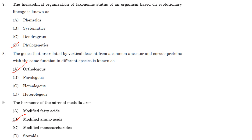The hierarchical organization of taxonomic status of an organism based on evolutionary lineage is known as phylogenetics. Phylogenetics is an attempt to classify organisms according to their morphology. Systematics deals with the evolutionary relationship between organisms, and a dendrogram is a diagram that shows the hierarchical relationship between objects.